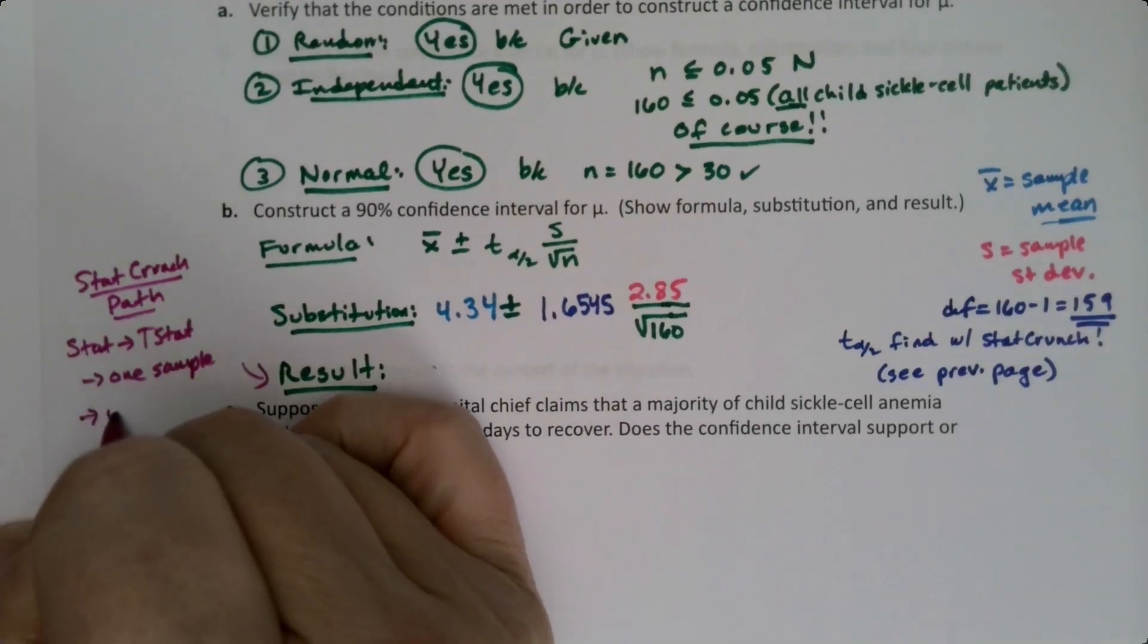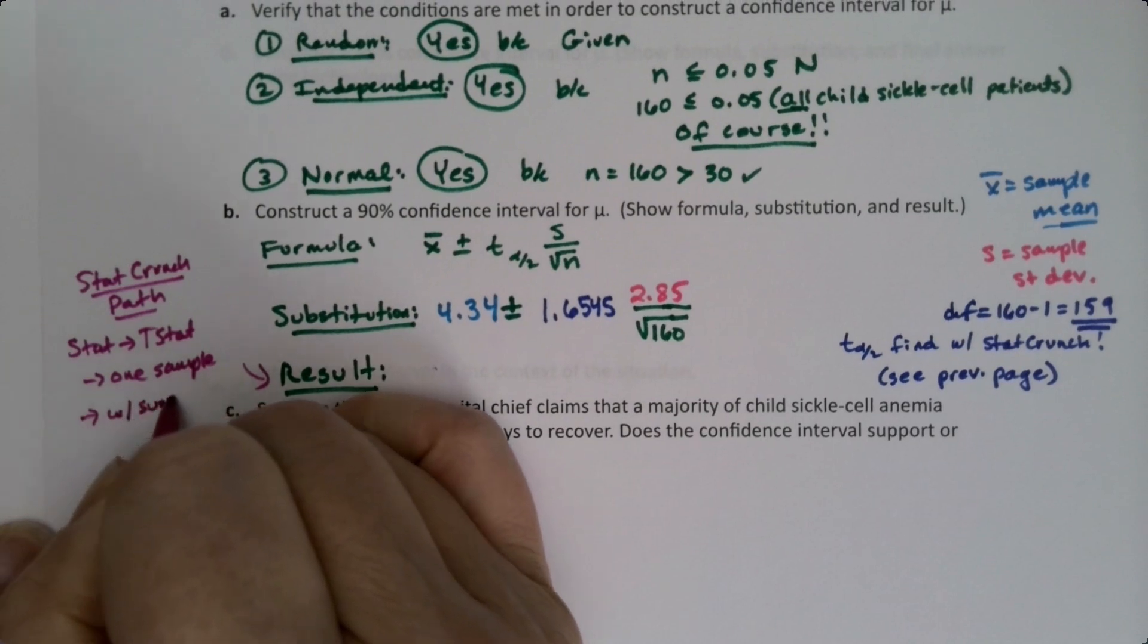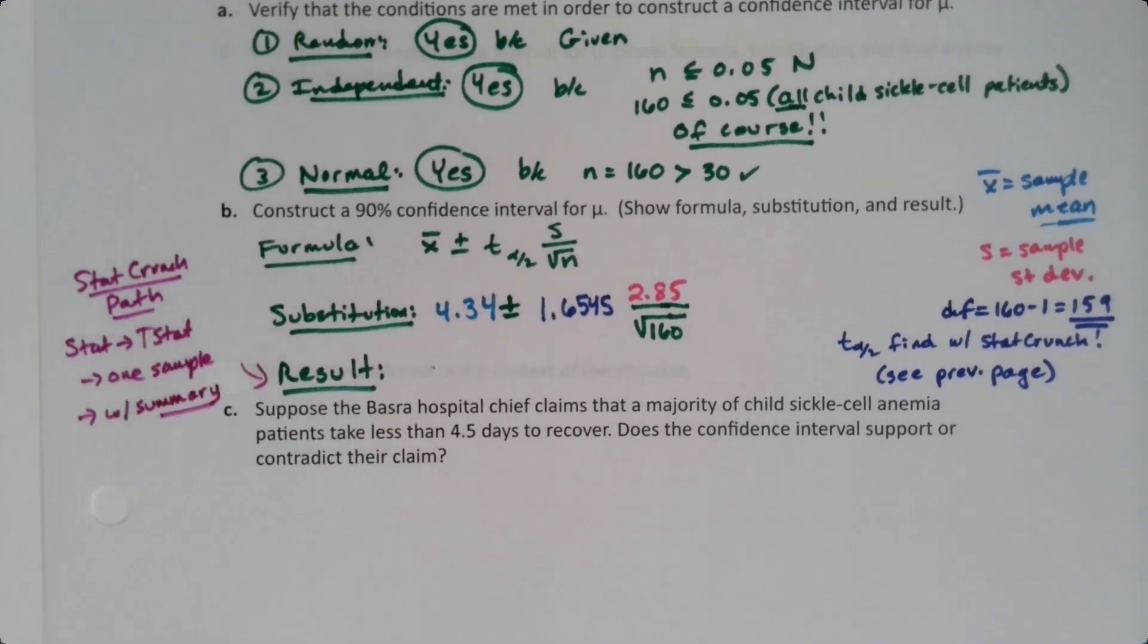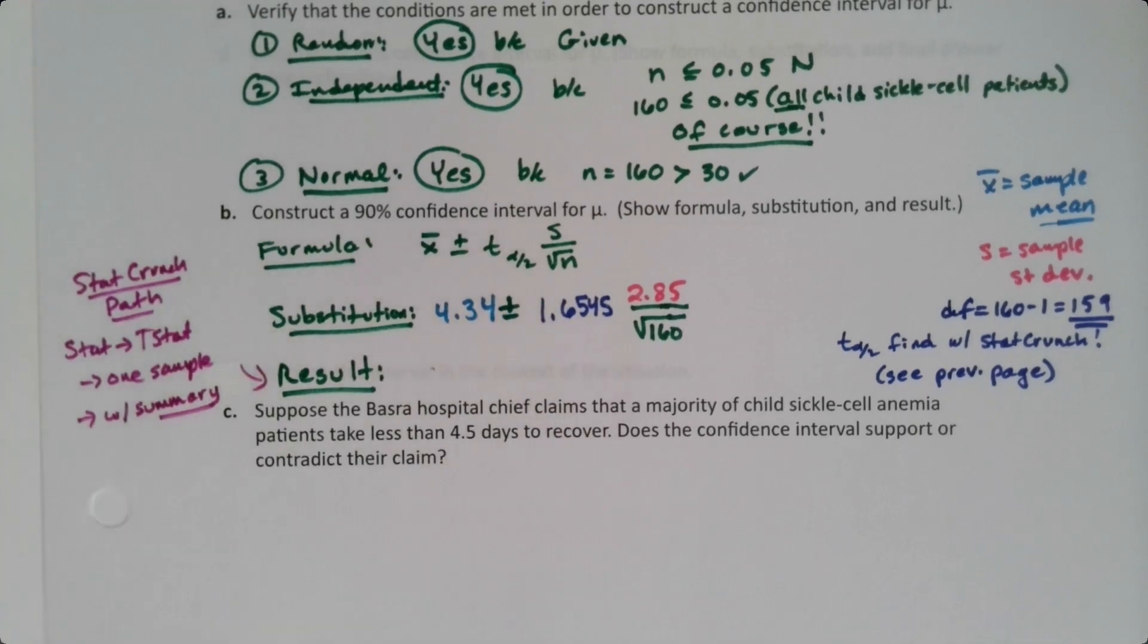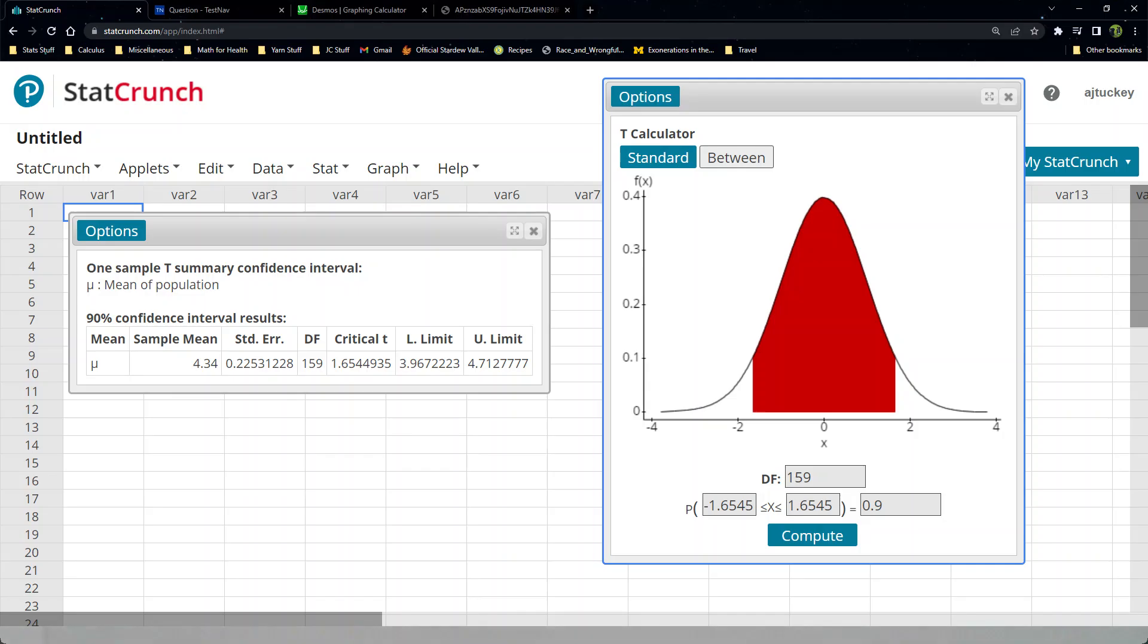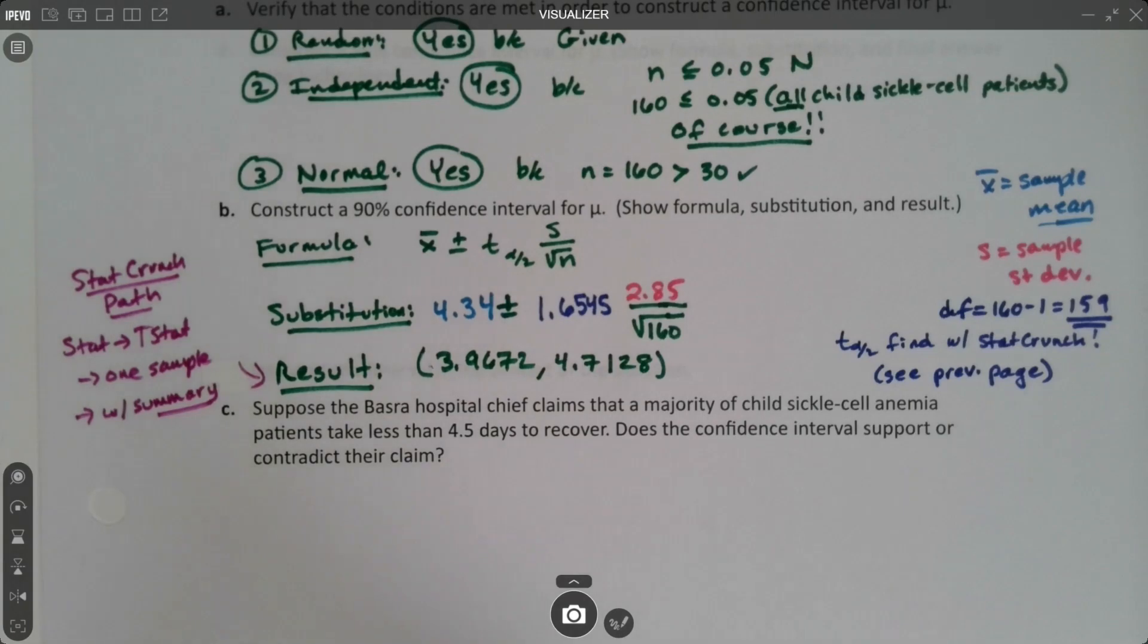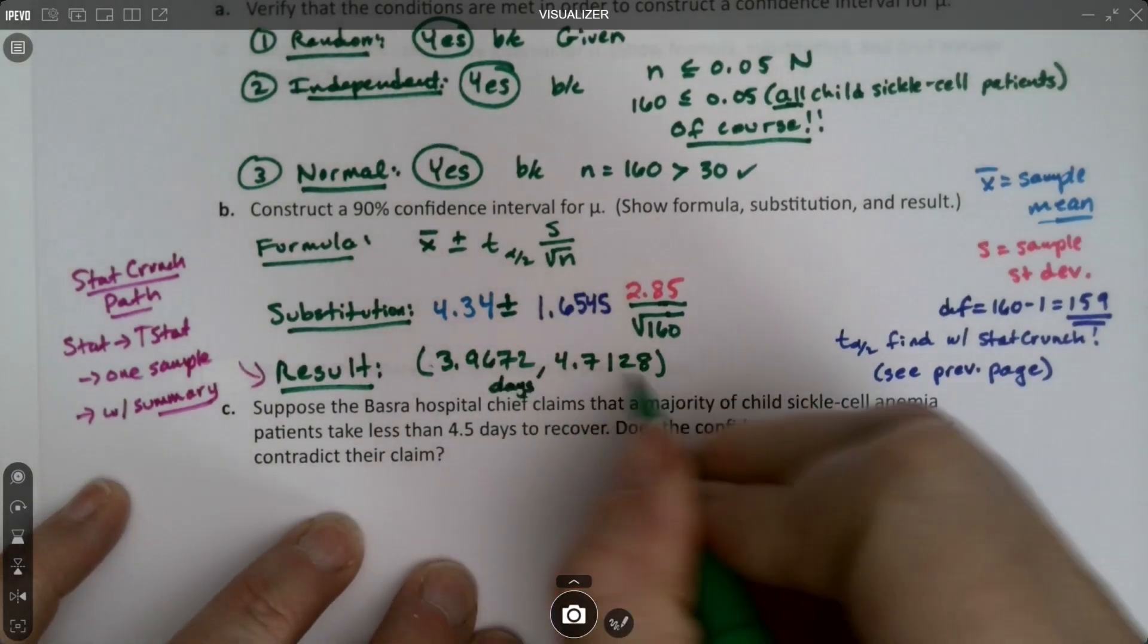So if you want to avoid doing the StatCalculators t, you can do it that way instead. So we had to do with summary on this one, with summary because we didn't have a data set. And if you want to see the t, you just click the check box that says critical t value, because that's the critical value. So we got the values, it was 3.9672 and 4.7128. And both of those are days, by the way. So for the unit for them, they'd be days.